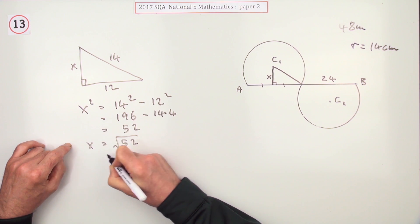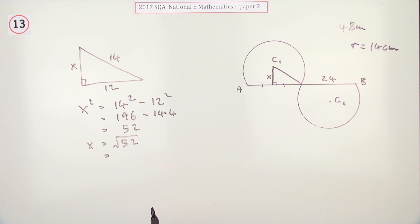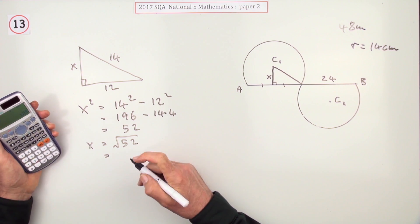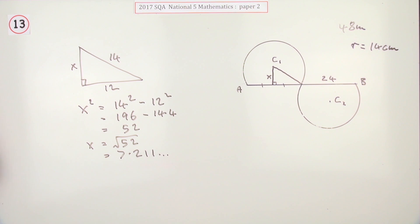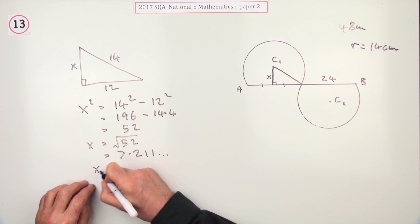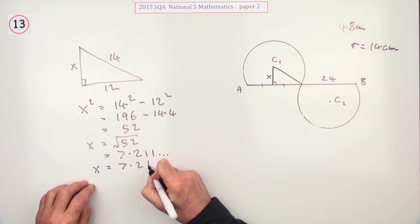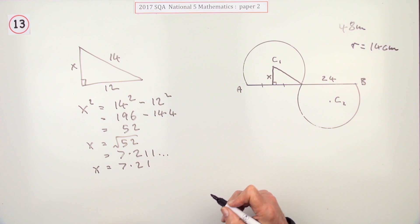And the square root of 52 is 7.211 and so on. So just now I think I'll keep x as 7.21 and then round my final answer off to one decimal place. So I'll see that number of centimeters.